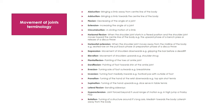Movement at joints terminology is quite a long list. Abduction: bringing a limb away from the center line of the body. Adduction — think of the word 'adding' — bringing a limb towards the center line of the body. Flexion: decreasing of the angle at a joint. Extension: increasing the angle at a joint. Do not get flexion confused with bodybuilder terminology about flexing — that refers to muscle tension, not always decreasing the angle at a joint.